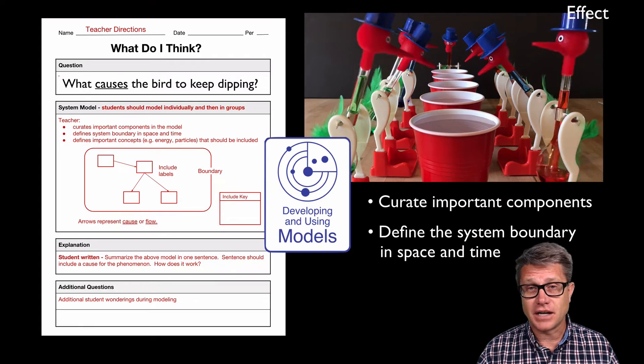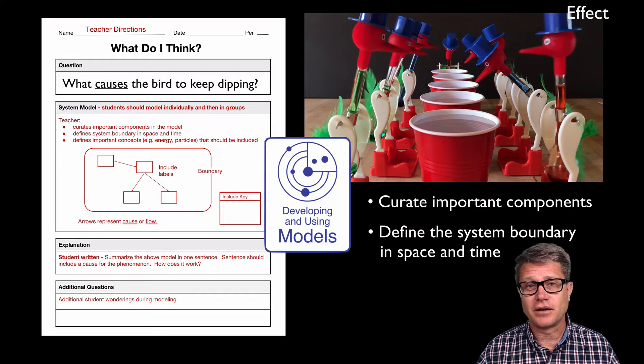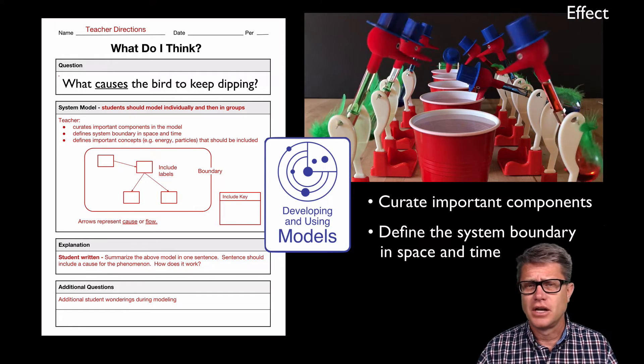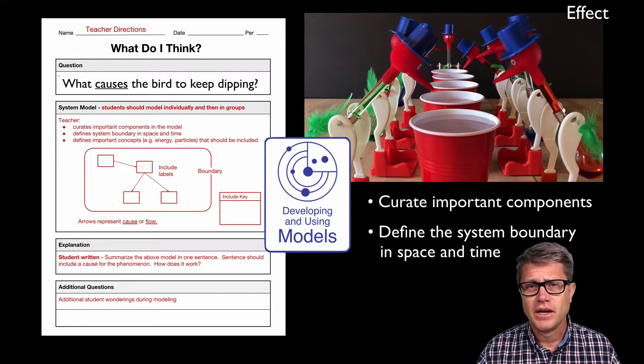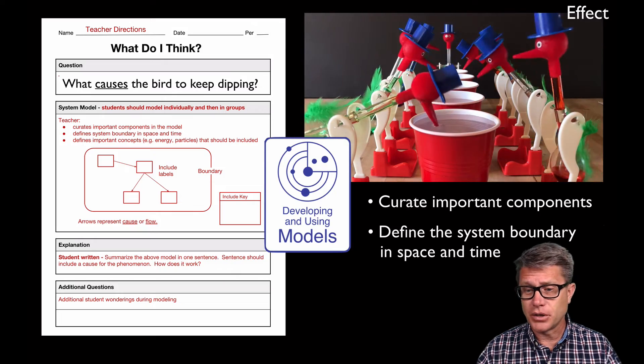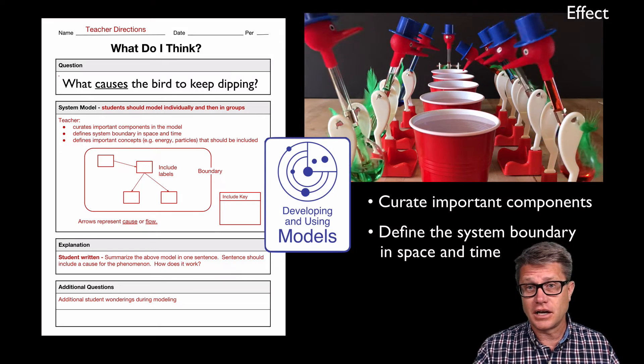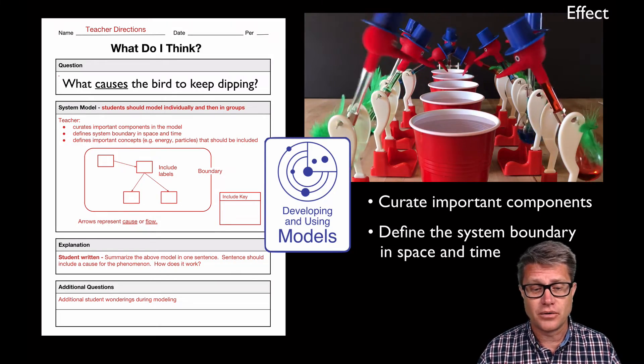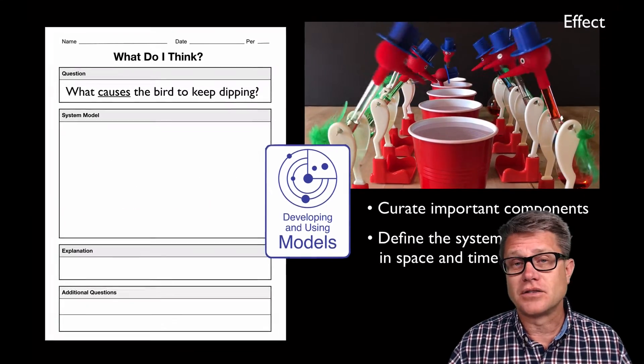Define the boundary in space and time. Lots of times when kids are creating a model, they'll just draw a diagram or a picture which has no explanation in it at all. And so I would say I want you to draw the bird in an upright position and then a down position so I can understand what you're thinking. Now we let the kids go. We let them create an explanatory model.